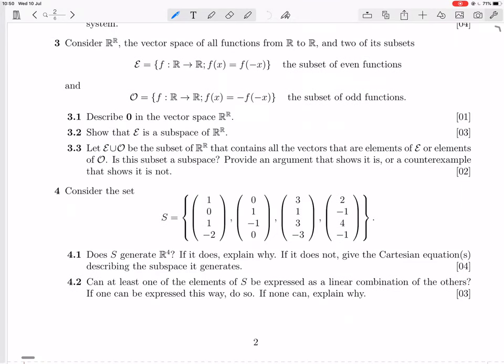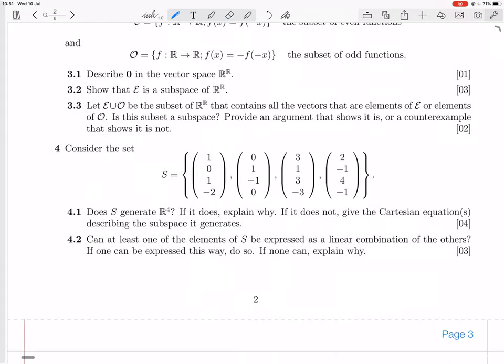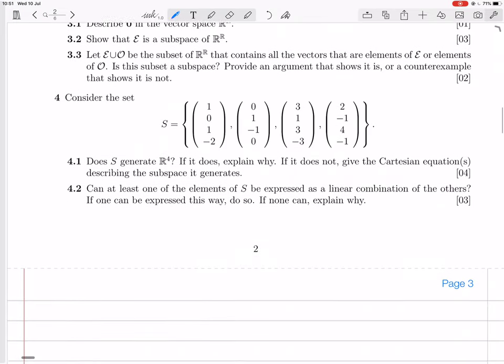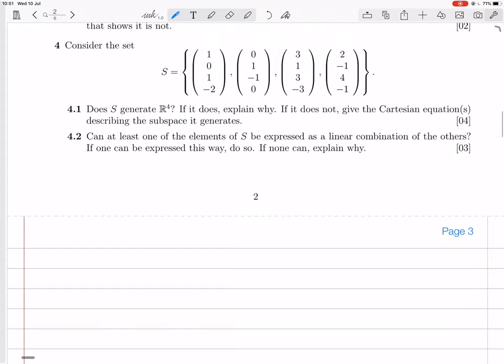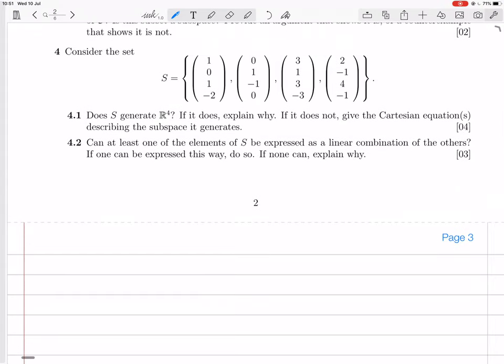Okay, so we're going to do the class test 1 of 2018, we're going to do question 4. So consider the set of four vectors in R4. The question is, does S generate R4? If it does, explain why. If it does not, give the Cartesian equation describing the subspace it generates. So we want to look at the space generated by this S. This is question 4.1.